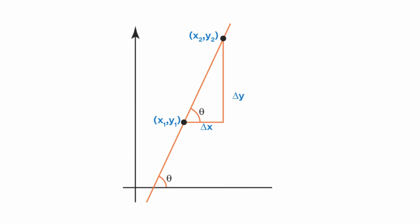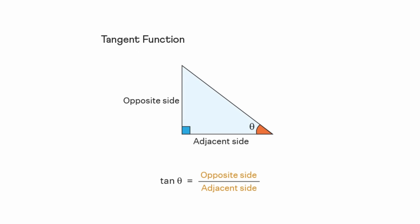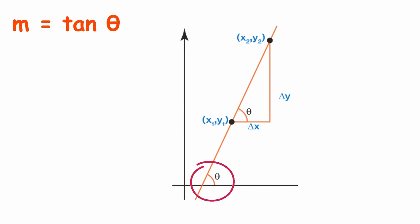If a line forms an angle theta with the positive x-axis, its slope can be expressed in terms of theta using the trigonometric tangent function. m equals tangent of theta, where theta is the angle of inclination of the line with respect to the x-axis.